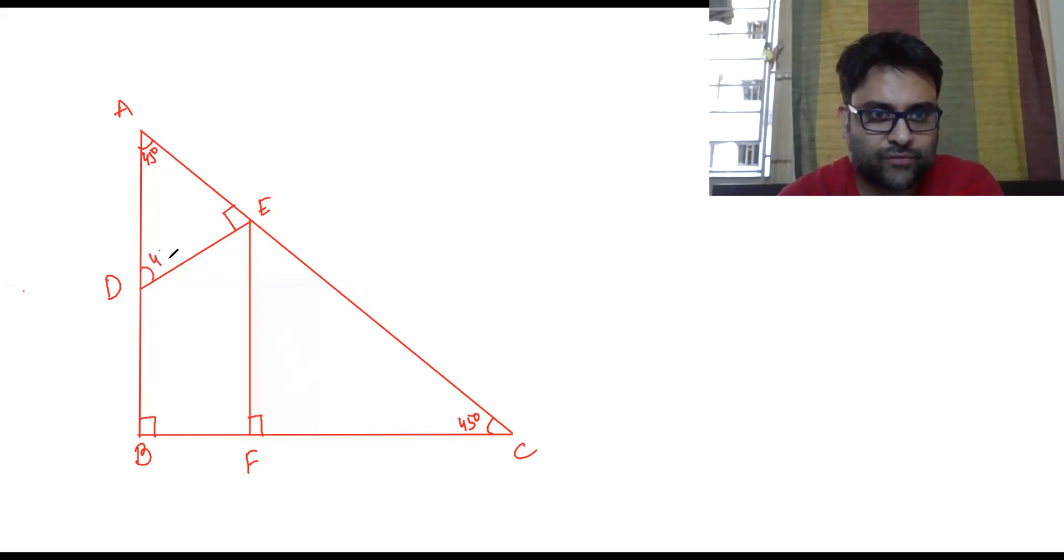If this is 90 degrees, this is 45 and this will also be 45. So let's call this as a, this is a, because these are the 45-45 angles.